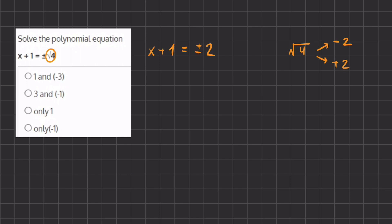And now we can have two values for x because we're going to separate this plus or minus, so we're going to write two different equations. We have x plus 1 equals positive 2, and x plus 1 equals negative 2 for our two answers coming from the radical.